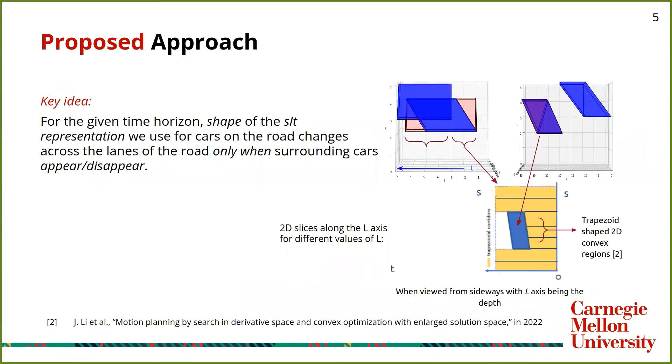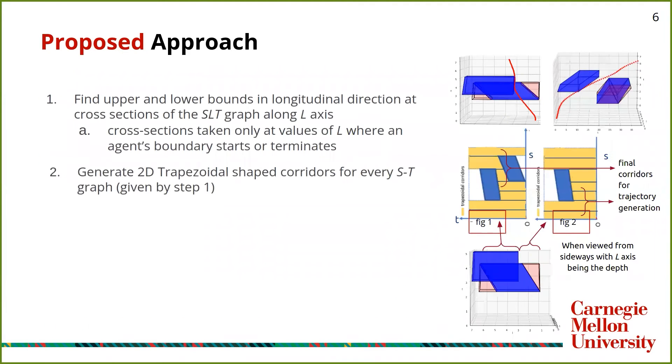The key idea in our approach was that for the given planning horizon, the shape of our cars in the SLT graph does not change, and a 2D slice of the 3D world along the lateral axis only changes when a car appears or disappears. For any of these slices, calculating the bounds in the longitudinal axis and the lateral axis is typically straightforward, as we know the position and velocity of the agents using a trajectory prediction algorithm.